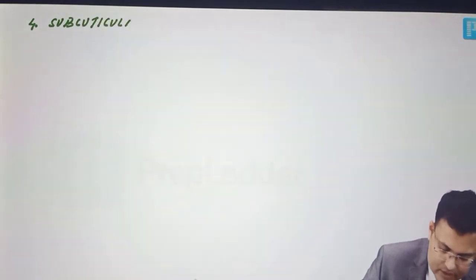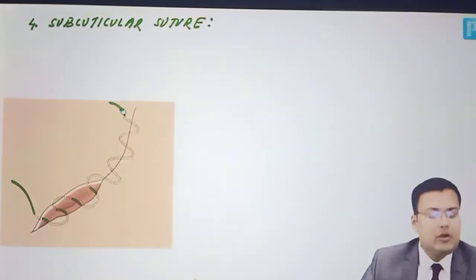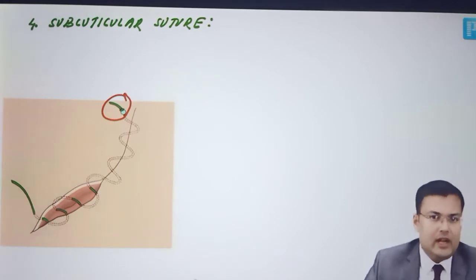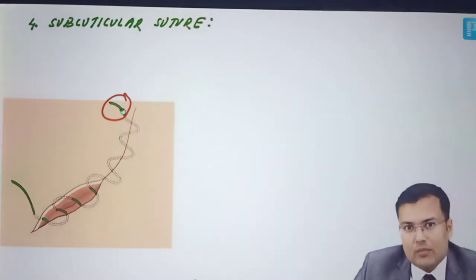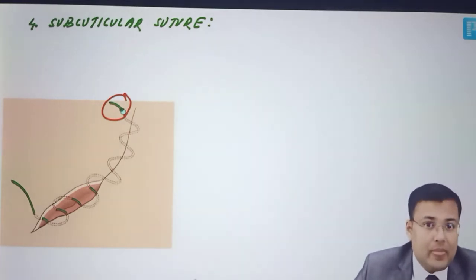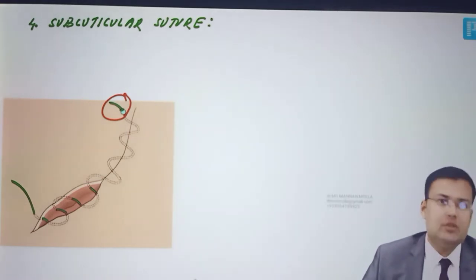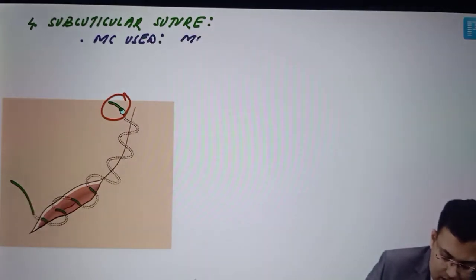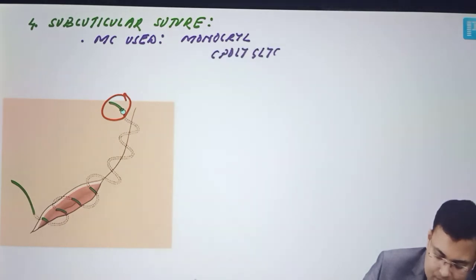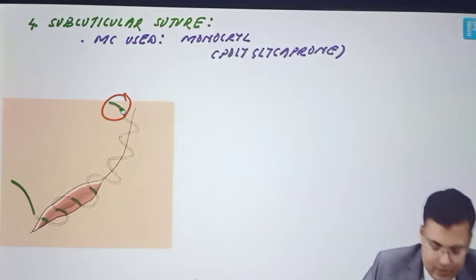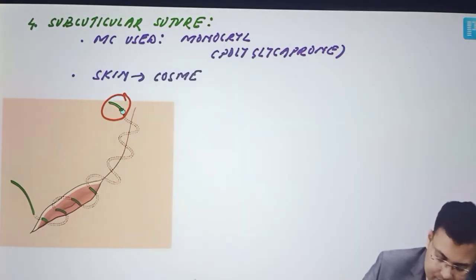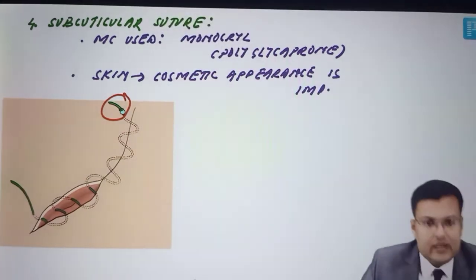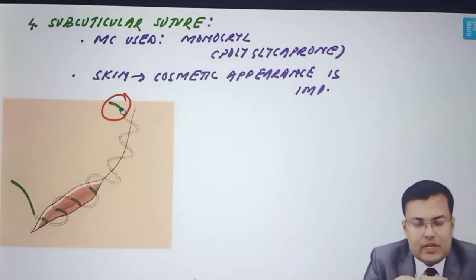Next is subcuticular suture. In this image, you can see only the ends — the rest of the suture is buried under the skin. This is subcuticular suture. For subcuticular suturing, the suture used is monocryl, also known as polyglecaprone. The advantage is that there is no scar. This subcuticular suture is used for cosmetic areas. The most commonly used suture is monocryl, and it is specially used in areas where cosmetic appearance is important. The prerequisite is that the skin edges should be approximated before taking the subcuticular suture.